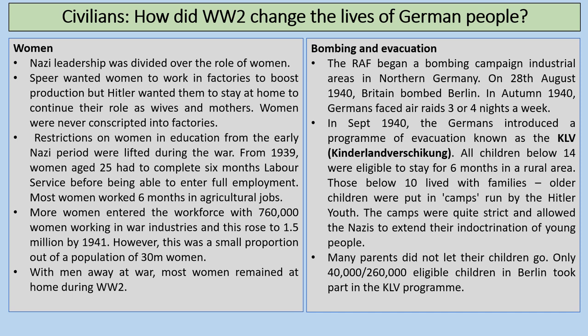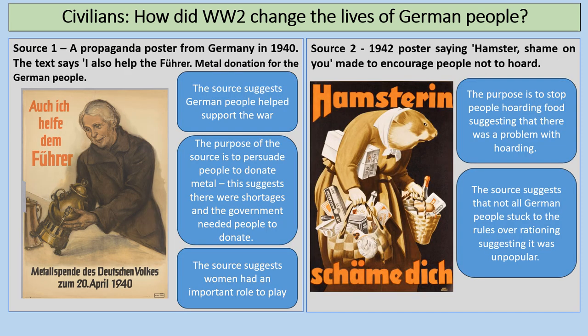Many parents did not let their children go — only 40,000 to 260,000 eligible children in Berlin took part in the KLV programme, showing a lack of support. A 1940 propaganda poster says 'I also helped the Führer — metal donation for the German people.' The source suggests German people helped support the war. The purpose was to persuade people to donate metal, suggesting there were shortages. The hamster 'shame on you' poster's purpose was to stop people hoarding food, suggesting rationing was unpopular and not all German people stuck to the rules.